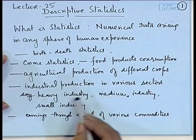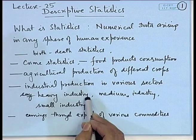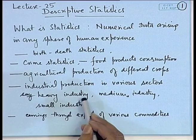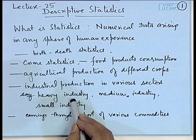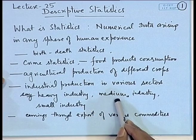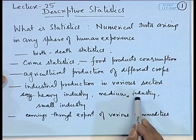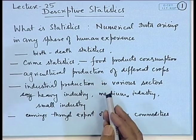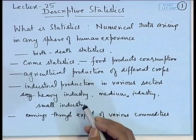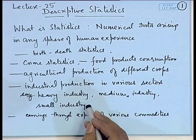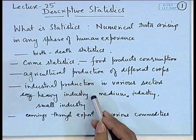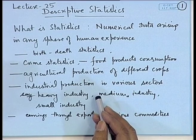Industrial production in various sectors — for example, how much capacity the heavy industry sector has and how much it is actually producing, and how much it is contributing towards the growth of the economy, both for local consumption and international exports. Complete industrial production data is of extreme importance to the government for formulating its various economic policies and deciding how much to invest in various kinds of industries.